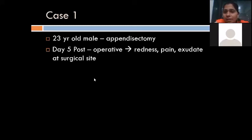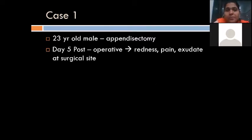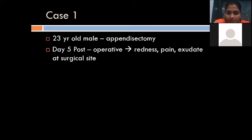Starting with Case 1: a 23-year-old male patient who has undergone appendectomy. On day 5 post-operative, he develops redness, pain, and exudate at the surgical site. These are signs of inflammation — redness, pain, and exudate — and they are also signs of infection.